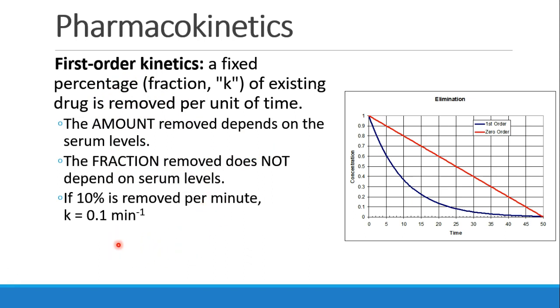If 10% is removed per minute, we call that a K of 0.1 per minute, which just means that 10% is removed per minute. That's a very helpful way to understand these rate constants.